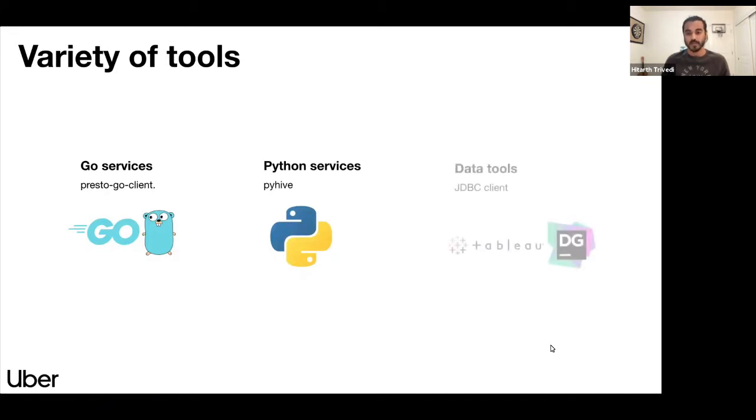There are a variety of tools available at Uber to talk to Presto. We have a lot of services in GoLang. These services use Presto GoClient to talk to Presto. We also have services in Python. These use PyHive Client to talk to Presto. And we also have a number of data tools like Tableau and Data Grips, which use JDBC Client to talk to Presto.